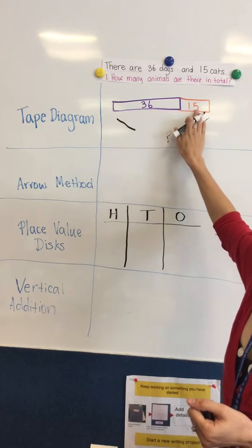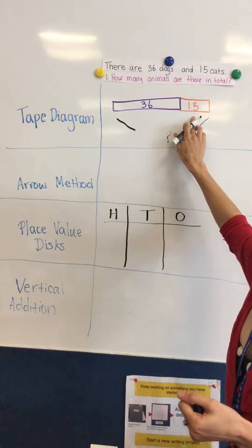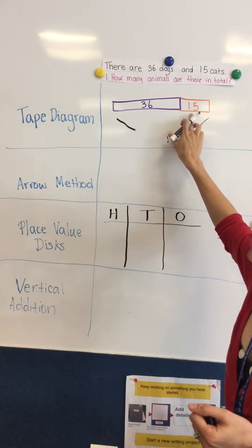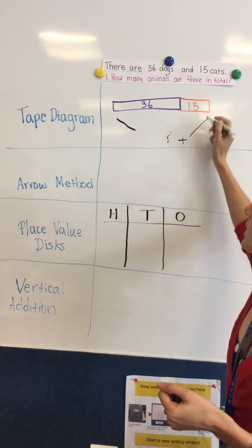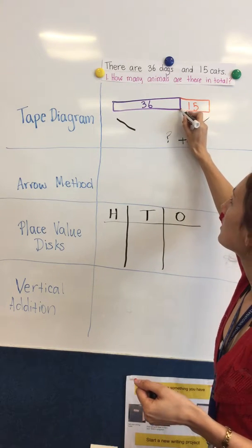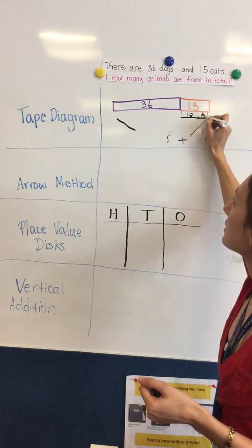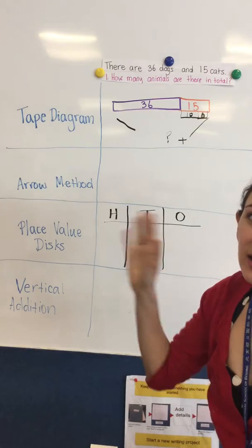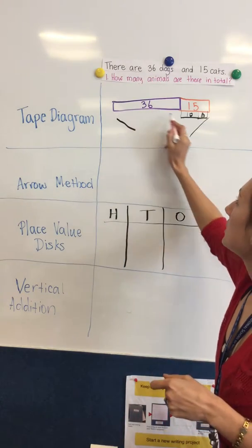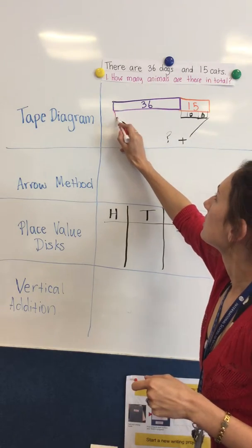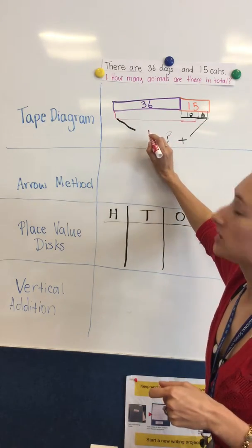It'll be 36 plus 15 equals something. When I then go and add it together, I can use the tape diagram to help me split up these numbers and add the two together. If I split up the 15 into 10 and 5, then I can add the number in small pieces. So 36 plus 10 equals 46.